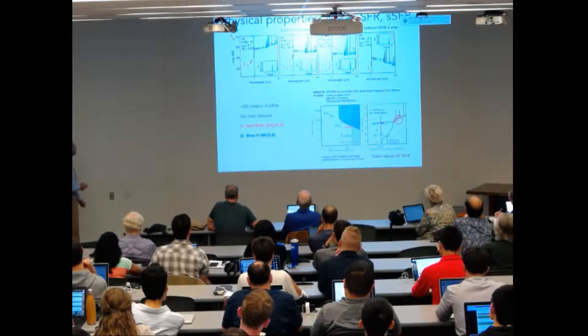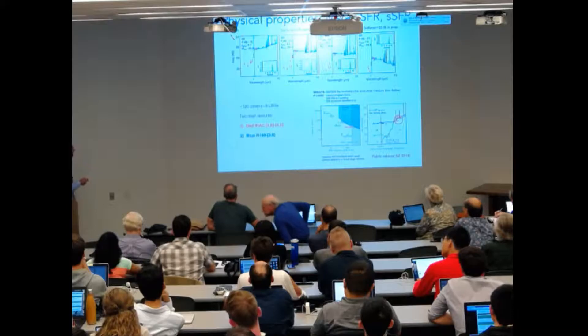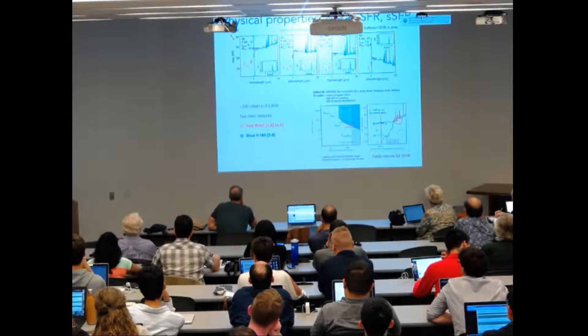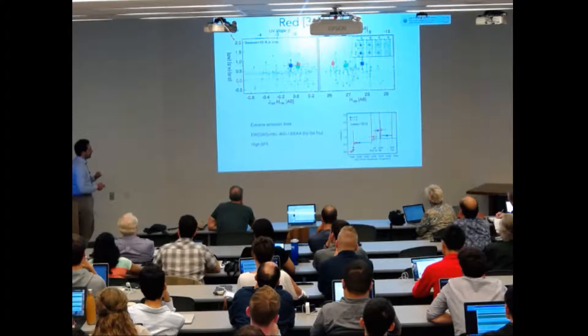And we built stacked SEDs shown here over four different luminosity bins. These SEDs are characterized by two main properties: one is that they have very red IRAC 3.6 minus 4.5 color, and the second is that they have blue H minus 3.6 color. Let's see more in detail what this means.